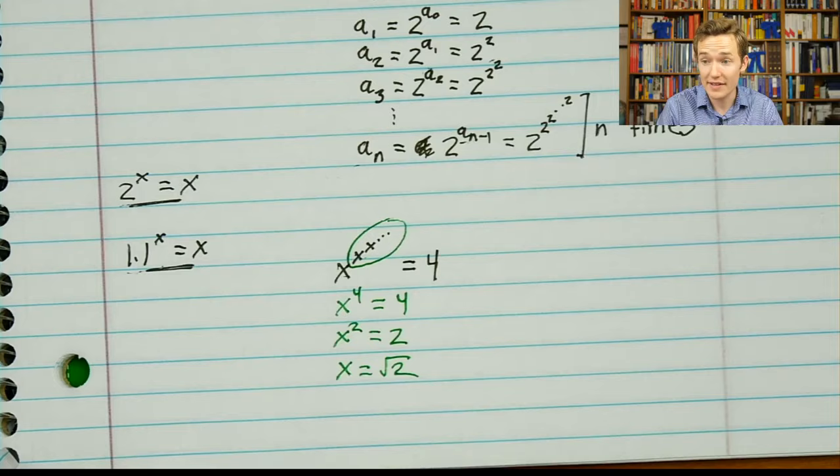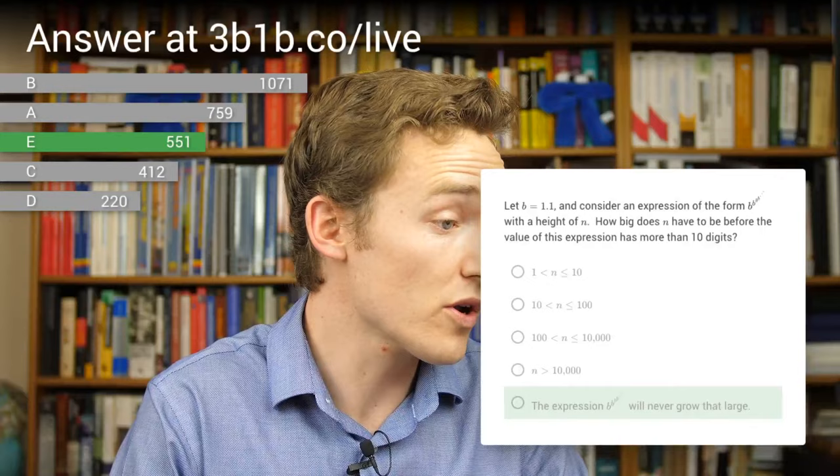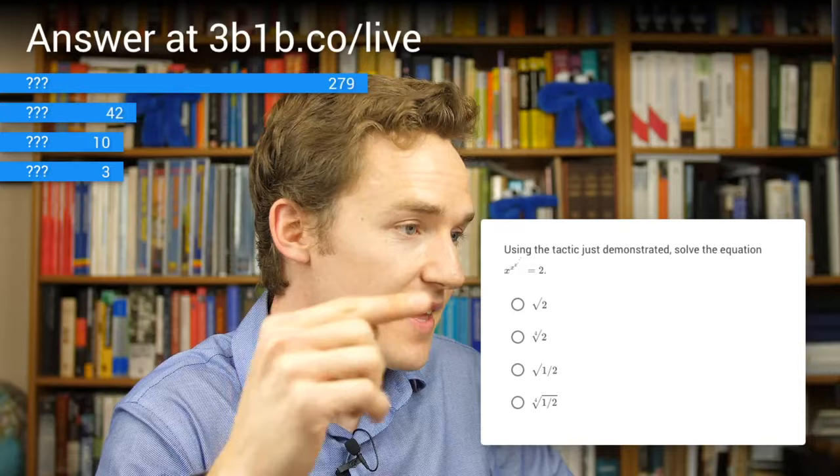Let me ask you another question where I'll have you apply the same tactic — leveraging that self-similarity to solve another one of these situations where you're looking for a power tower with an unknown base and seeing when it equals a pre-specified value. The question asks: using the tactic just demonstrated, solve the equation x to the x to the x on and on up to infinity equals 2.